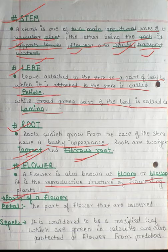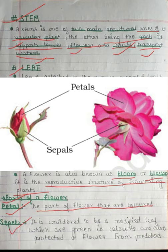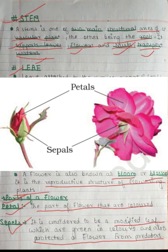Parts of a flower: First, petals. The colored parts of flowers are known as petals. Next, sepals — these are considered to be modified leaves which are green in color and protect the flower bud. The sepals are found just below the flower.